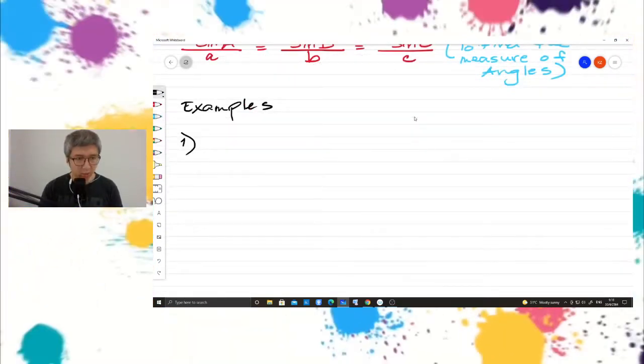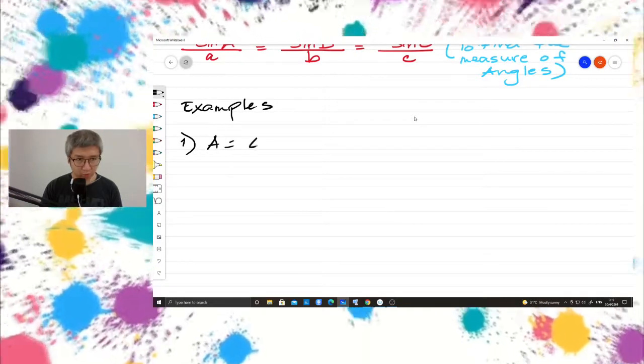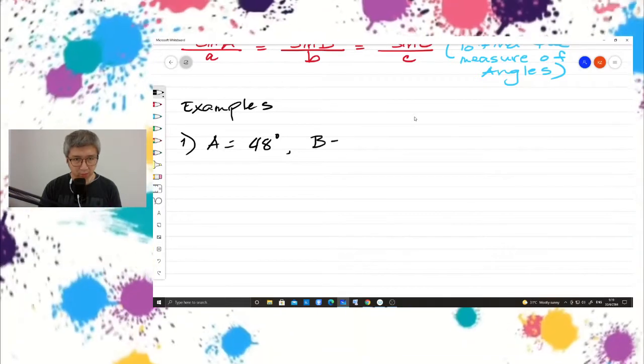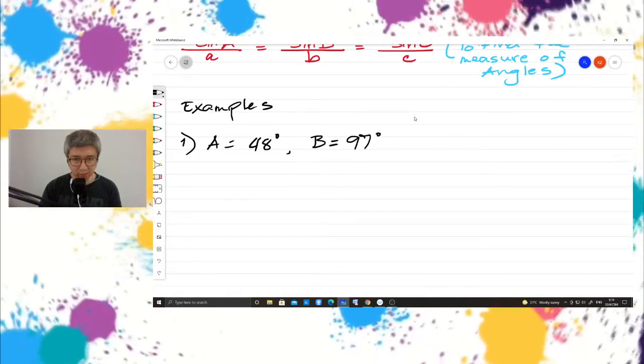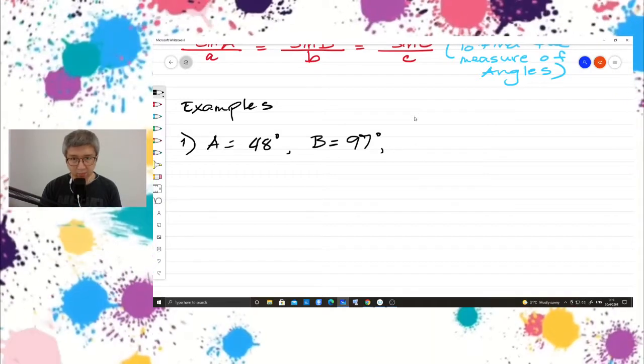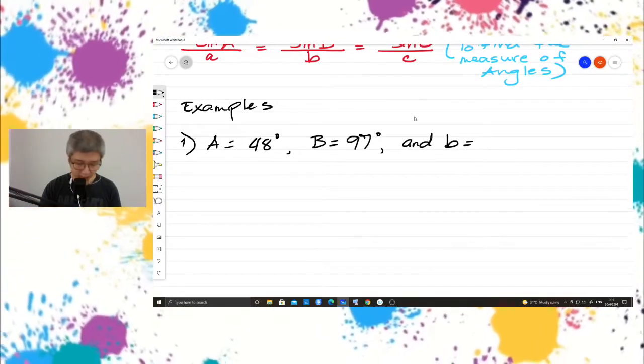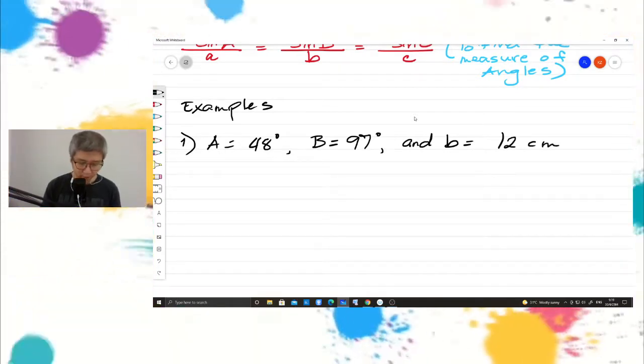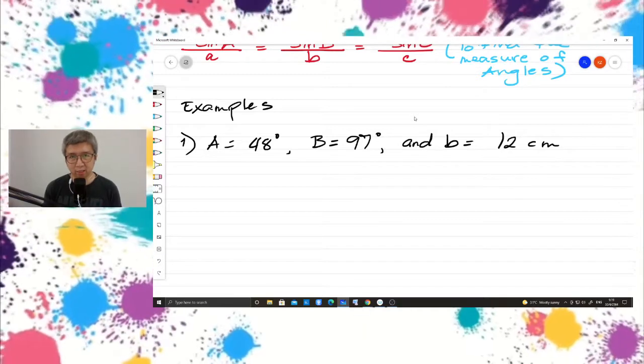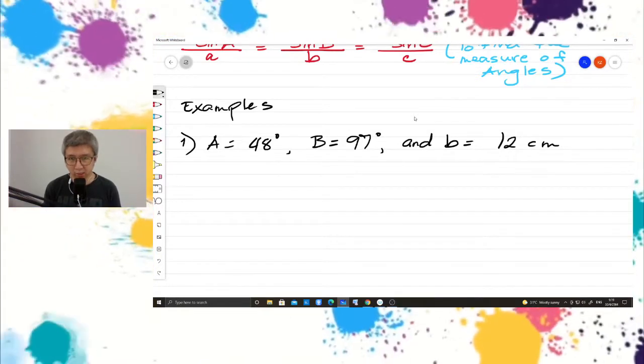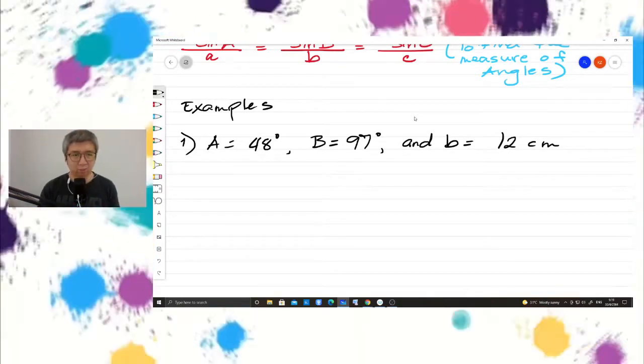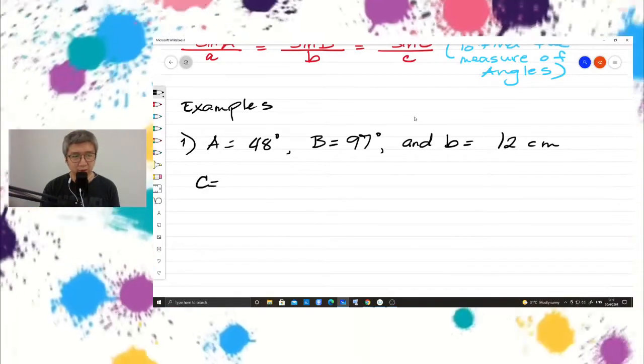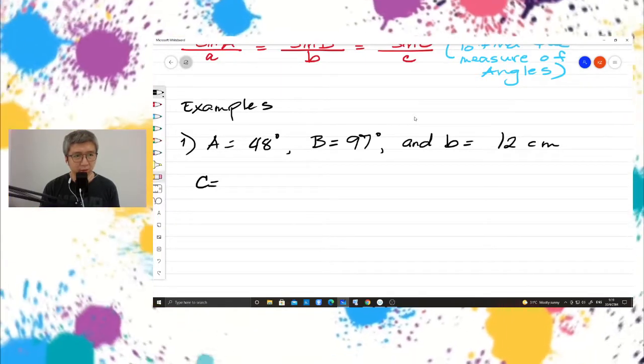Number one. Let's say angle A is 48 degrees, angle B is 97 degrees, and side B is 12 centimeter. Now, how can we know if this is a right triangle or not? So let us find the value of angle C.